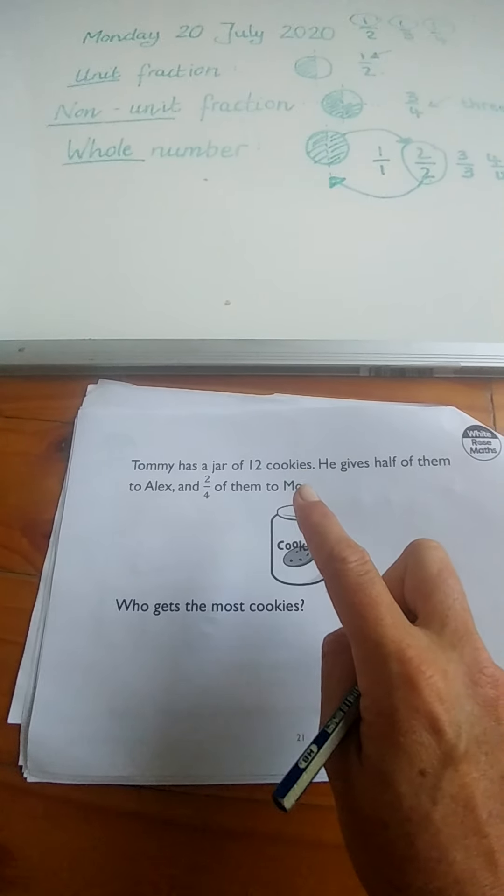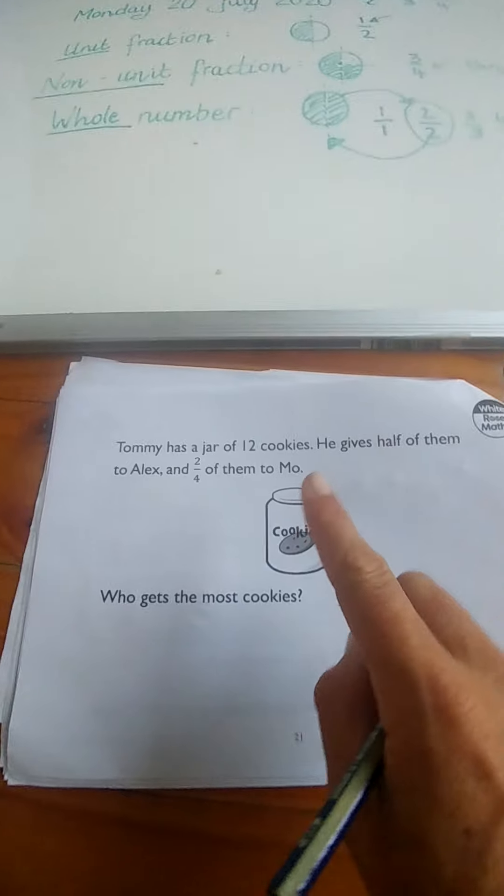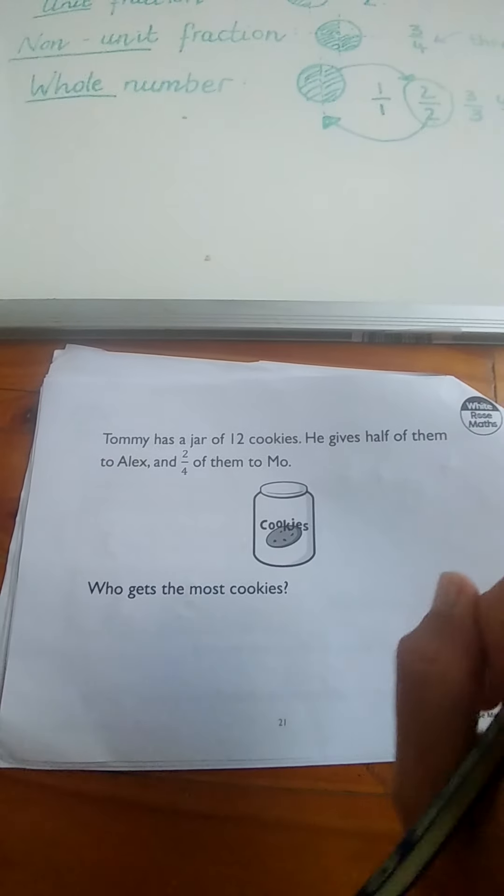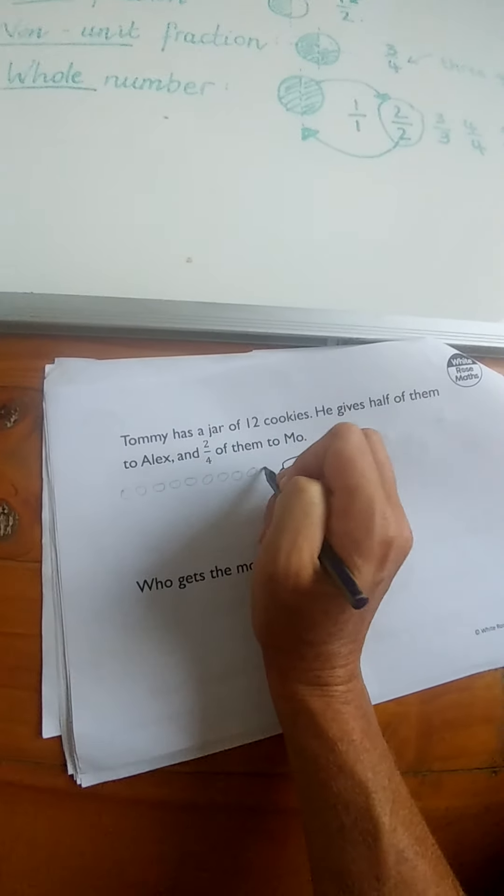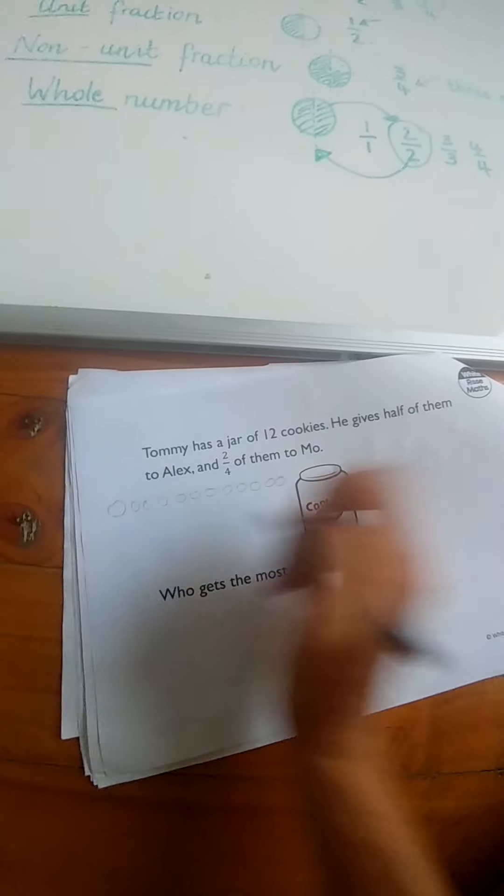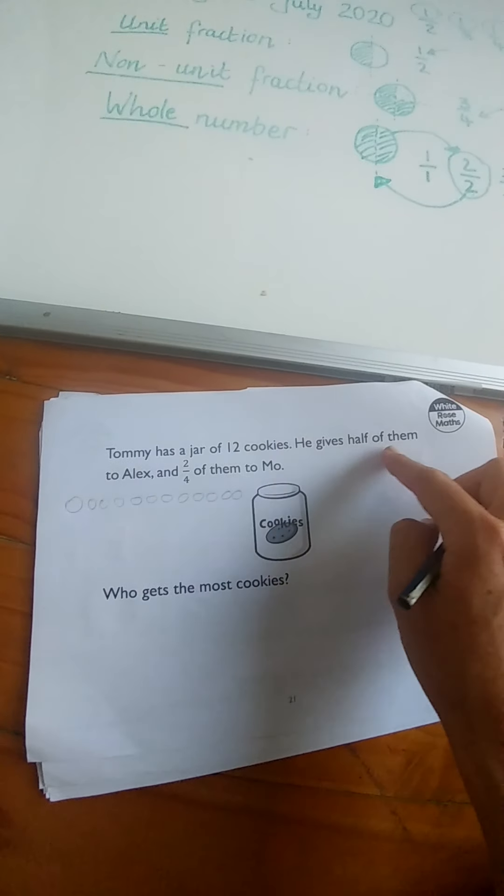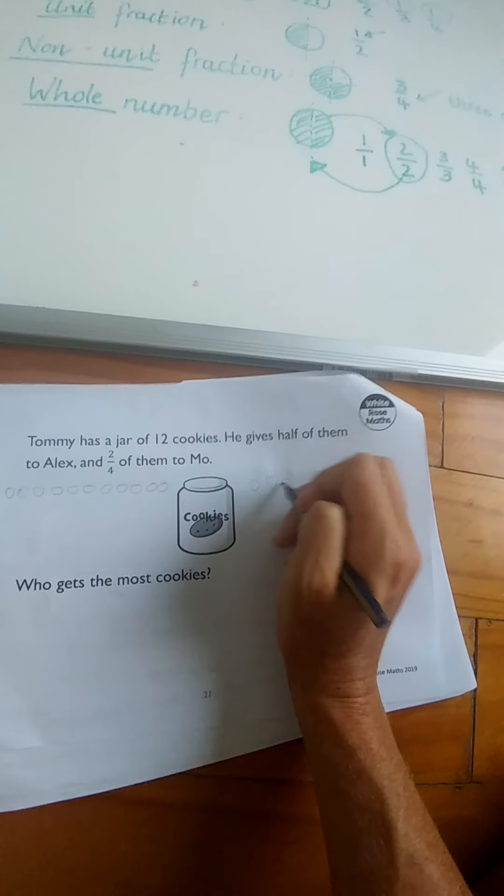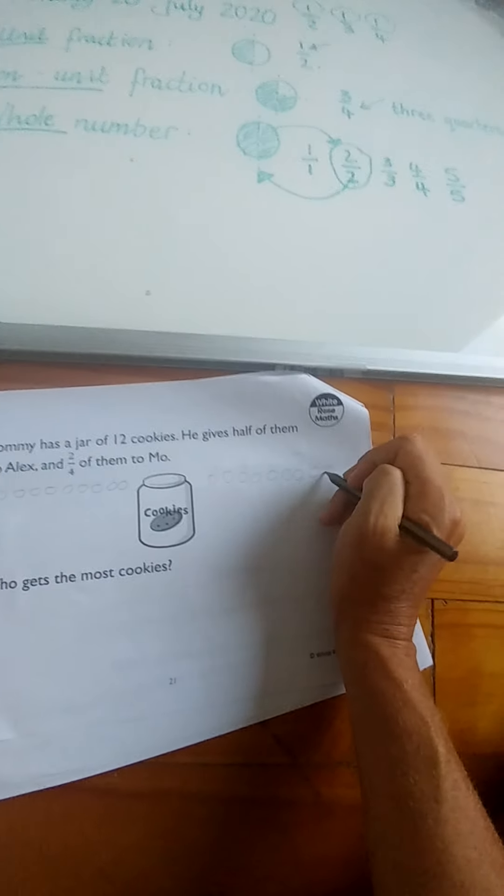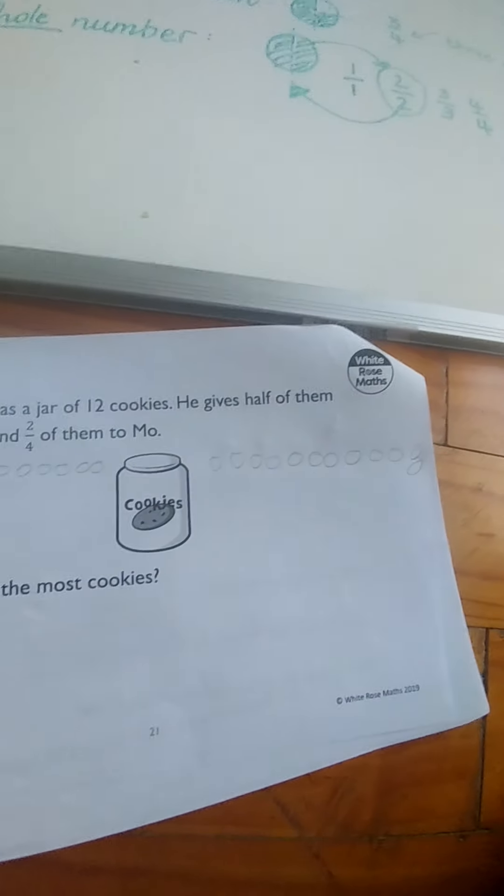Okay, Tommy has a jar of 12 cookies. He gives half of them to Alex and two-fourths of them to Mo. So we are going to draw our cookies again. One, two, three, four, five, six, seven, eight, nine, ten, eleven, twelve. Okay, these are the 12 cookies that we're going to see what half of them is. And then we're going to draw another 12 cookies this side: seven, eight, nine, ten, eleven, twelve.